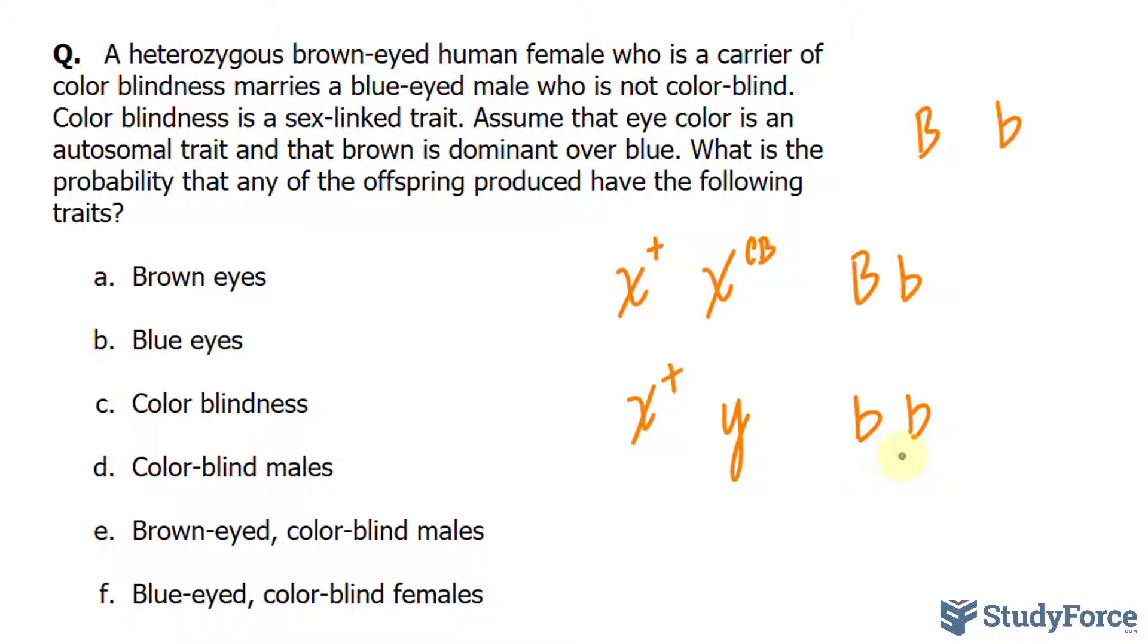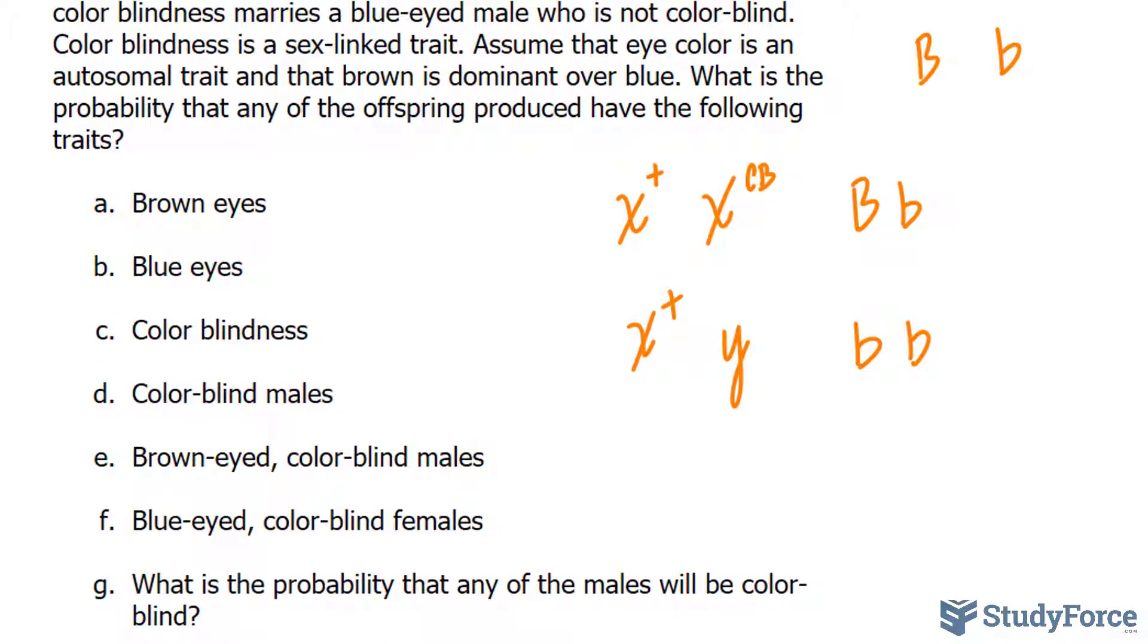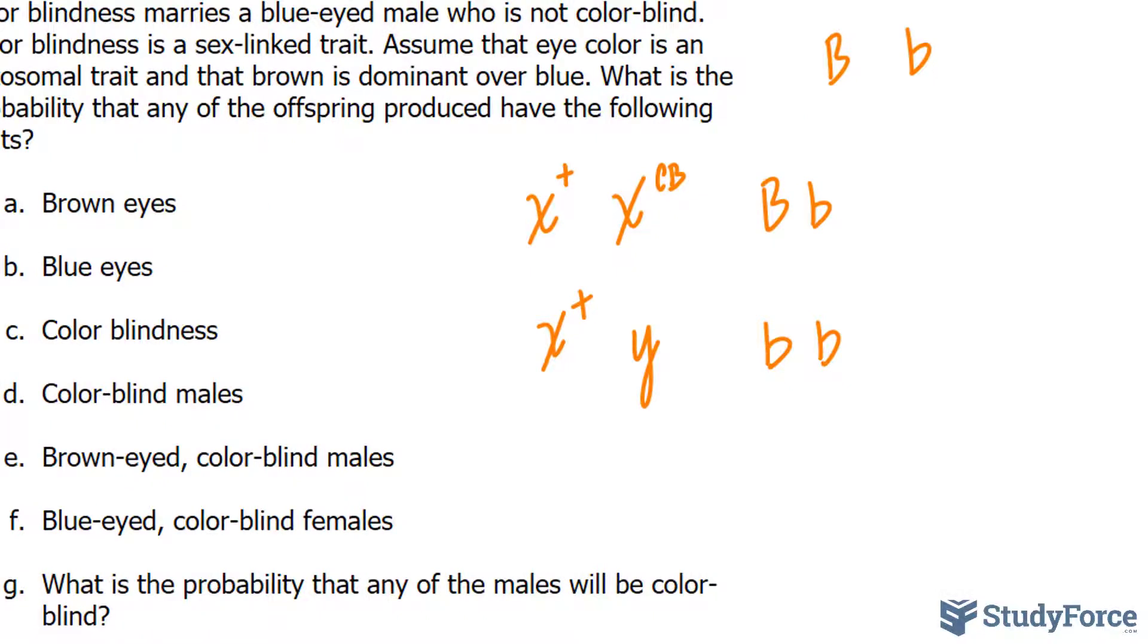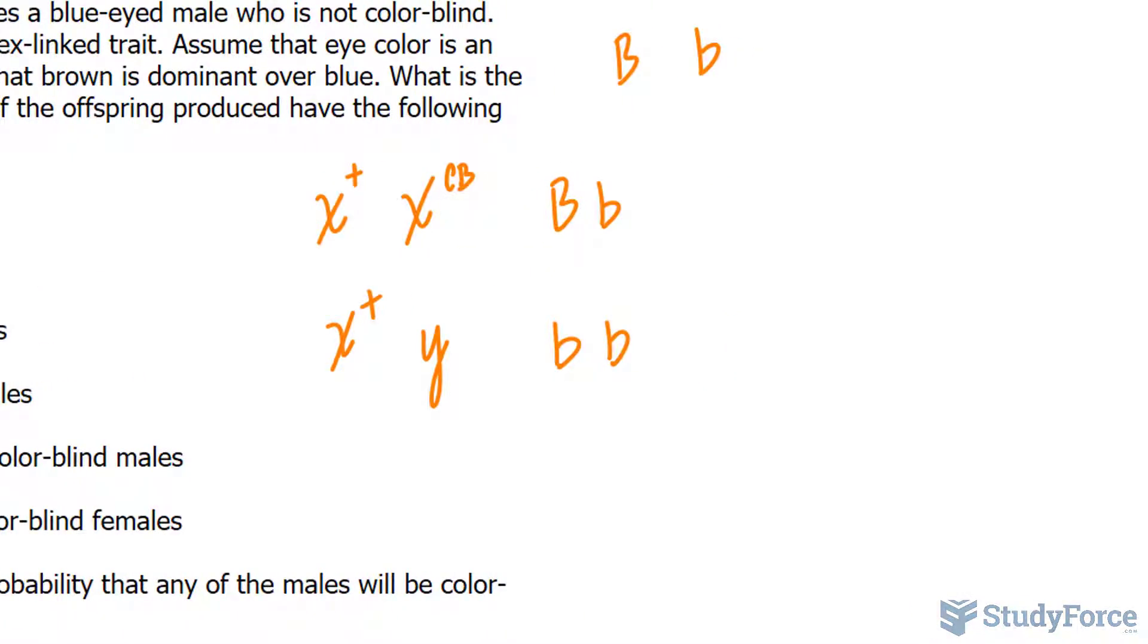Now to answer these questions, we need to create two crosses. And this is what they will look like. The first cross is concerning colorblindness.